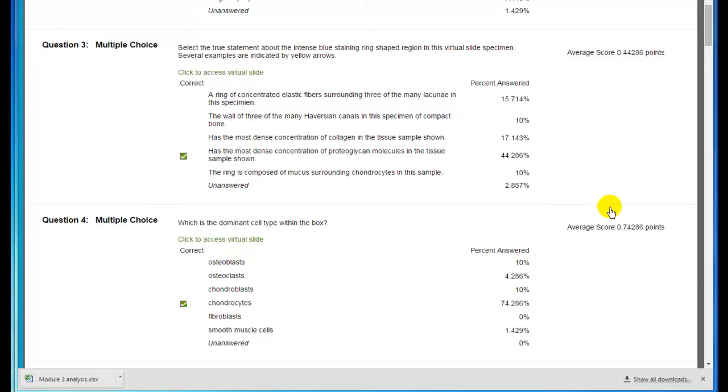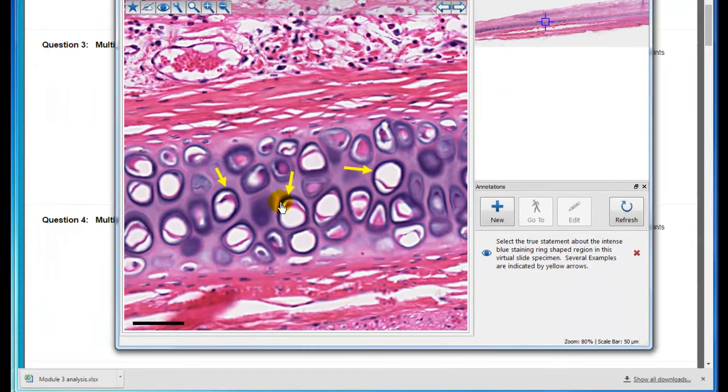The next question asks you to select the true statement about the intense blue staining ring-shaped region in this virtual slide specimen. The correct answer was has the most dense concentration of proteoglycan molecules. This was the territorial matrix around a lacuna in cartilage. The chondrocytes would be located here, and this is the territorial matrix, the inner territorial matrix. It's blue stained with hematoxylin, and that's where you have a high concentration of proteoglycans. This is very characteristic hyaline cartilage. You can see the perichondrium, and these small cells here are chondroblasts that are forming chondrocytes.